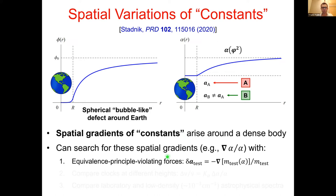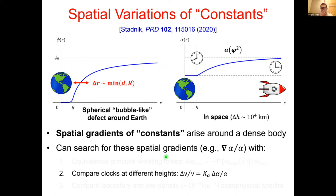Since the acceleration is not the same for different materials, these forces violate the equivalence principle. Another approach is to compare clocks at different heights, looking for atomic clock frequency shifts correlated with changes in the fine structure constant alpha — distinct from the usual gravitational redshift effect. The ideal experiment would compare a clock close to Earth's surface with another at least 10,000 kilometers away, for example on a satellite, since the spherical bubble-like defect thickness cannot significantly exceed Earth's size.